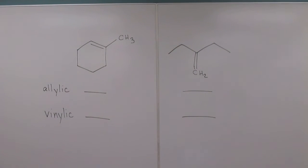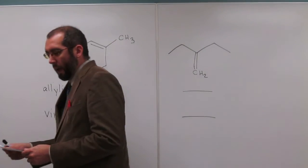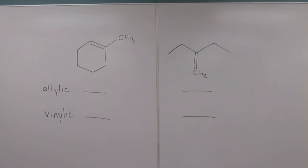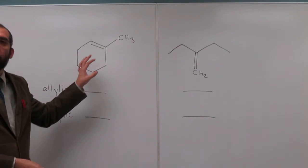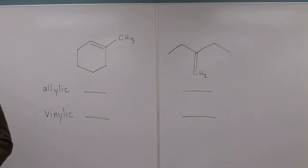Okay, so let's try this problem. It asks how many allylic and vinylic hydrogens are found in the following compounds? When you're looking at these two compounds and you see these terms allylic and vinylic, the portion of the molecule you want to be looking at or around is the alkene, right? Everybody on the same page at that point?